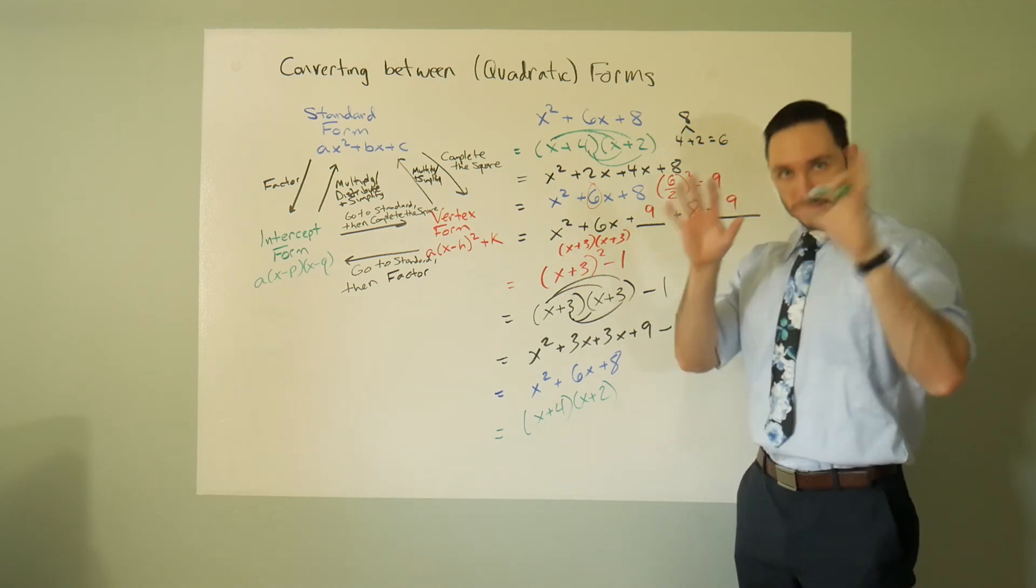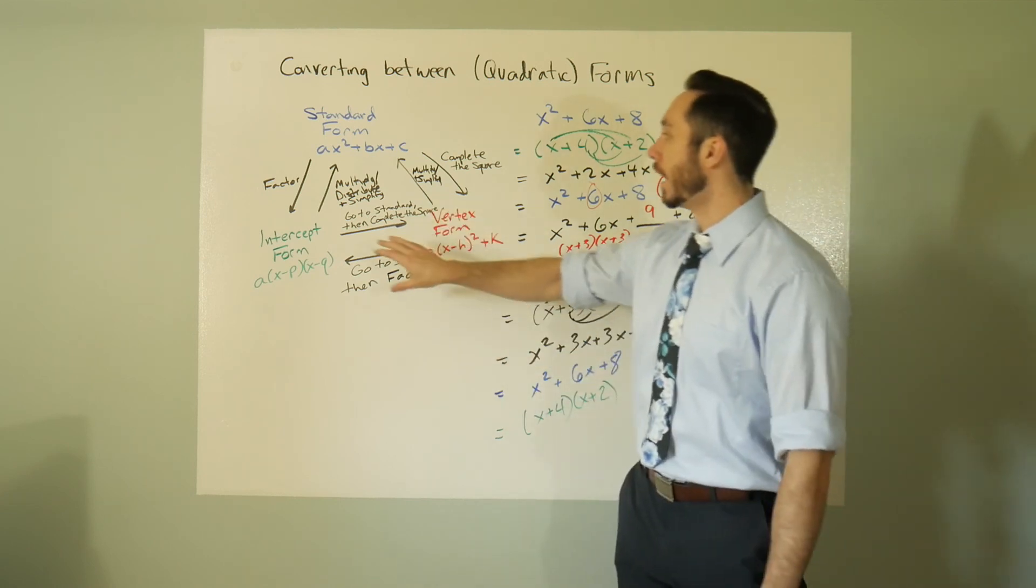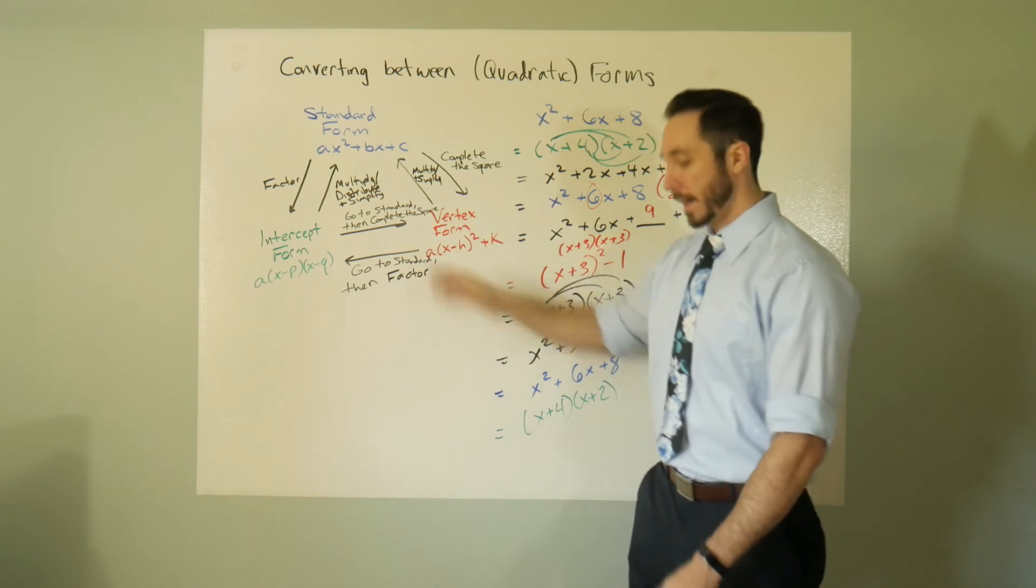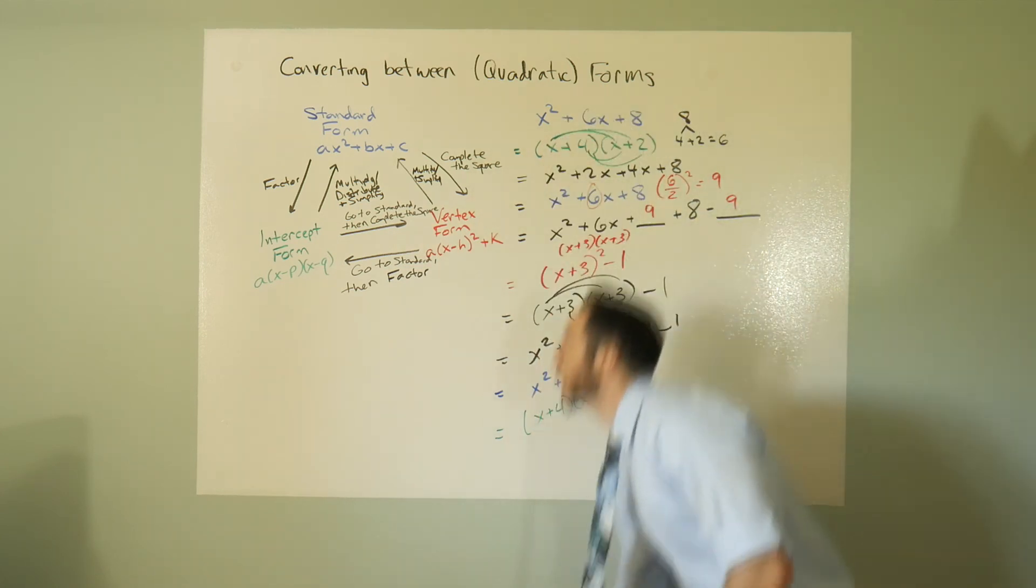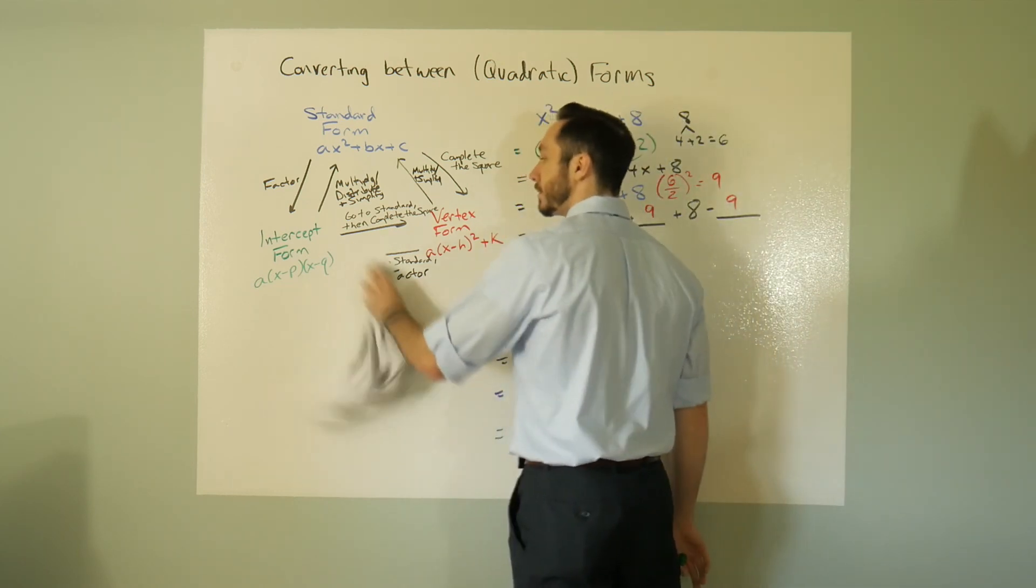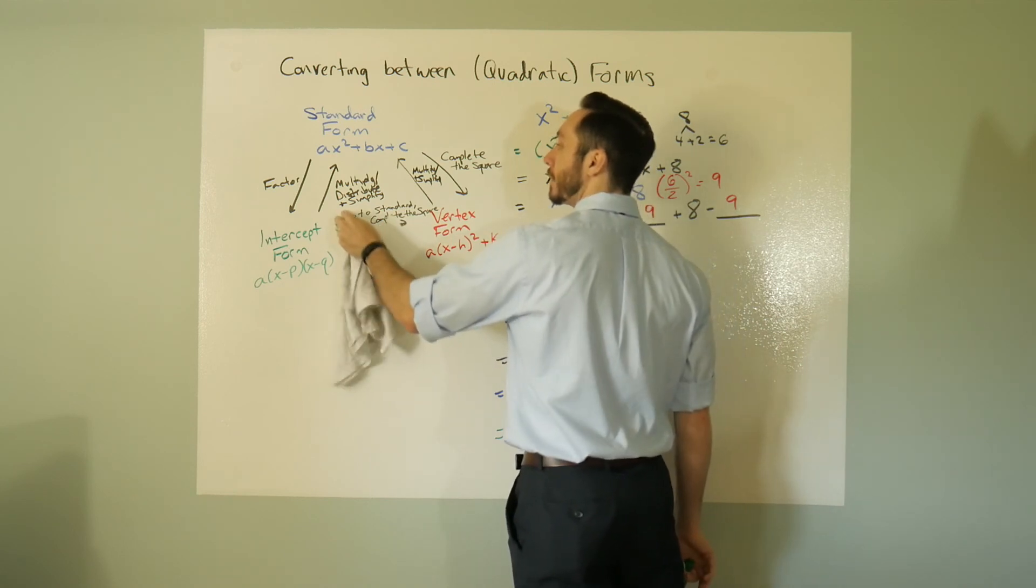So more or less, TL;DR, this rundown summarize: going from intercept to vertex or vertex to intercept, honestly not even really worth talking about here. You have to go to standard form either way, so I'm actually going to break the bridge.